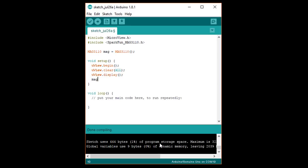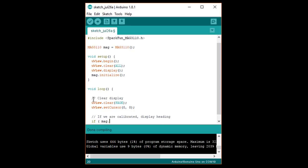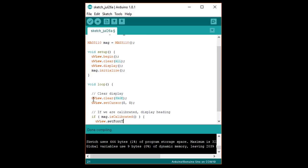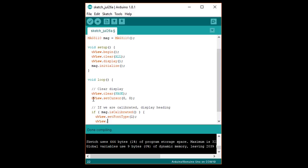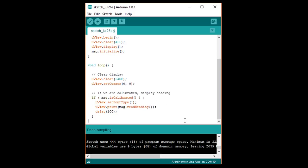In loop, write slash slash clear display, followed by uview dot clear page in all capital letters, and uview dot set cursor 0 comma 0. Then write slash slash if we are calibrated display heading. Under that, if open parentheses mag dot is calibrated close parentheses, and then uview dot set font type one, uview dot print mag dot read heading, and then delay 100. Assuming we've calibrated our sensor, we want to display our heading as a number on the microview.